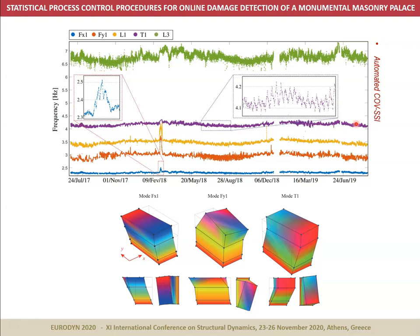In this slide, I show the results of the automated operational modal analysis of the palace using covariance-based stochastic subspace identification. In particular, we found five modes in the frequency range up to 10 Hz, including two global bending modes FX1 and FY1, one torsional mode T1, and two local modes L1 and L3. It is interesting to note that local sudden increases in the resonant frequencies are observed from February 25 to March 1, 2017, due to freezing air temperatures. Therefore, it is quite clear that the relationship between resonant frequencies and environmental temperature is complex in this example, so the motivation for using the proposed damage detection approach is quite clear here.